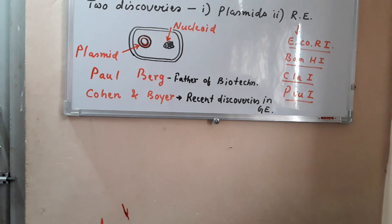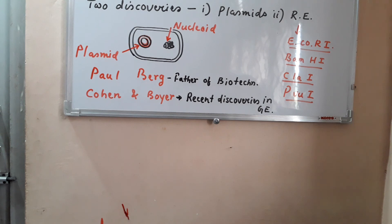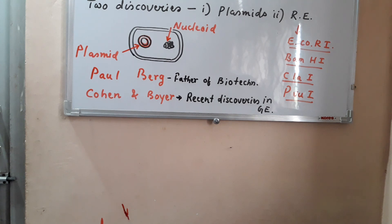Restriction endonucleases are enzymes present in bacteria as a component of the restriction modification system, which is equivalent to the immune system of higher organisms, including human beings. They help the bacteria to survive against viral attack by cutting the foreign viral DNA.